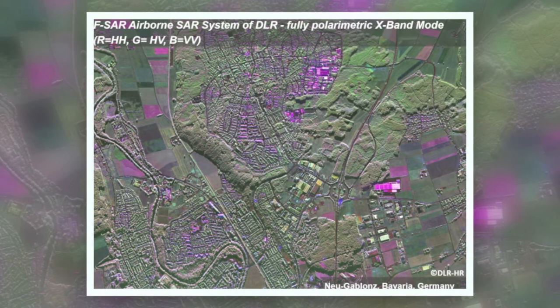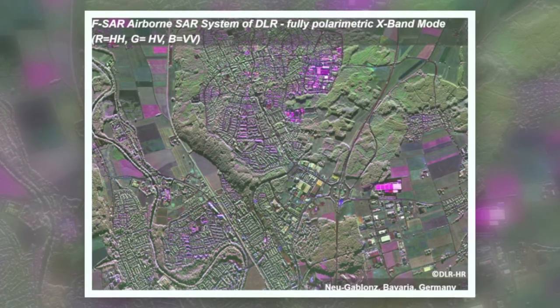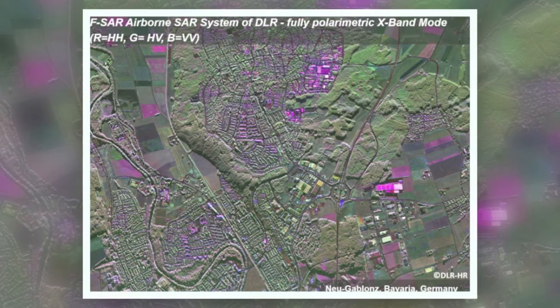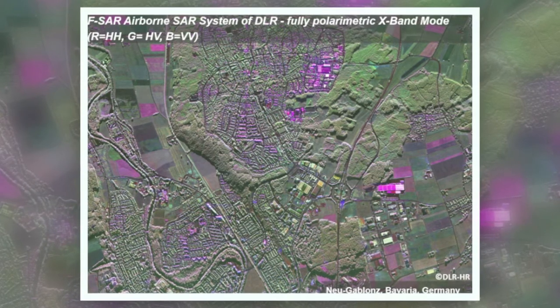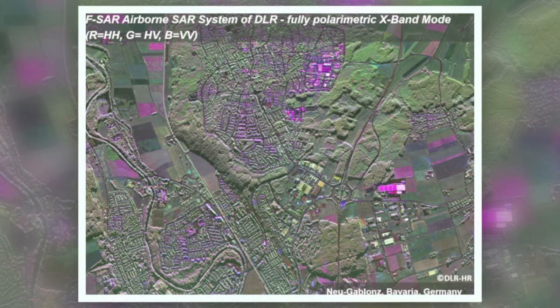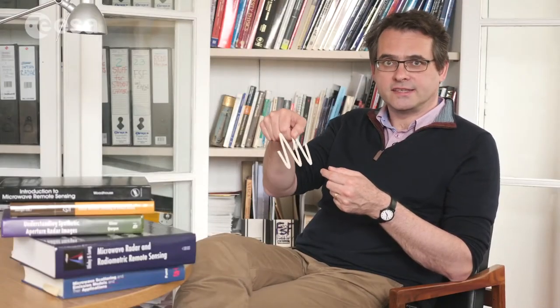You can also have cross-polarized channels. The cross-pole channel is when you transmit one polarization, say horizontal, but you receive the vertical back — or you can transmit vertical and receive the horizontal echoes. The cross-pole channel is particularly useful when looking at land cover classification or mapping, because vegetation and the volume scattering from vegetation tends to depolarize the signal quite considerably, so you get a lot of cross-pole channel coming back if there's lots of vegetation.